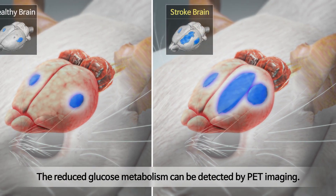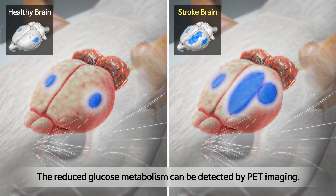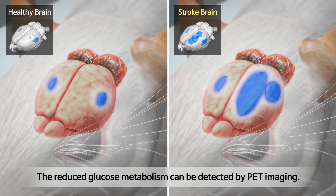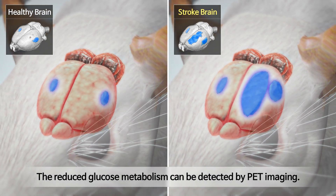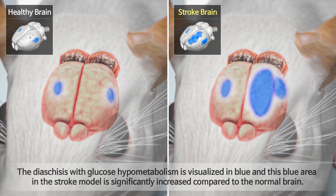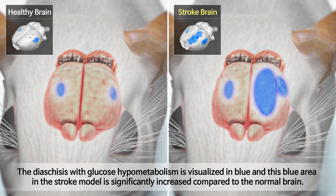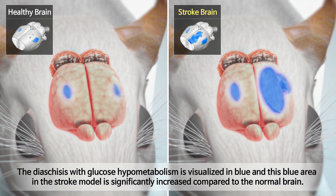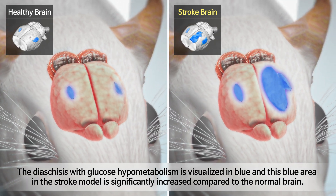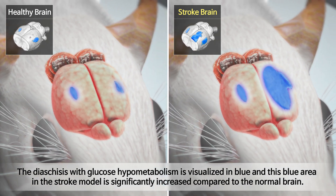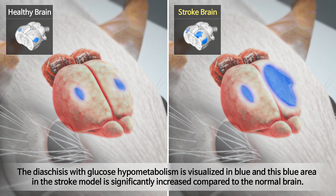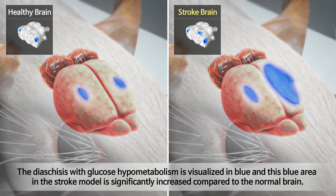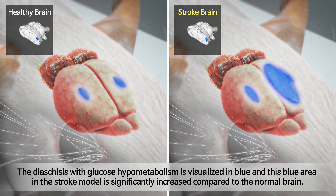The reduced glucose metabolism can be detected by PET imaging. The diaschisis with glucose hypometabolism is visualized in blue, and this blue area in the stroke model has significantly increased compared to the normal brain.